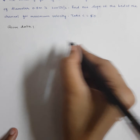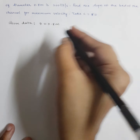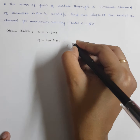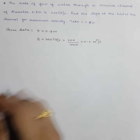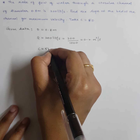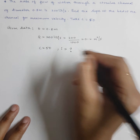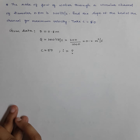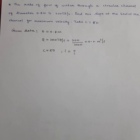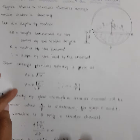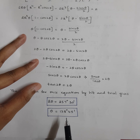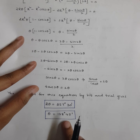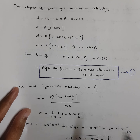Given data: diameter D equals 0.8 meters, Q equals 200 L/s equals 0.2 m³/s, C equals 50. We need to find bed slope I. For maximum velocity condition, remember: theta equals 257°30' (i.e., 2θ), so θ equals 128°45', depth of flow d equals 0.81D, and hydraulic radius M equals 0.3D.